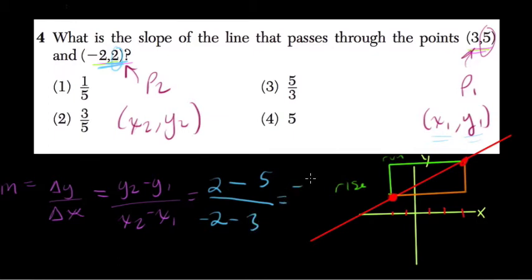2 minus 5 is negative 3, and negative 2 minus 3, well, what's that? Negative 2 minus 3 is negative 5. If I simplify negative 3 over negative 5, I know I can get it as plus 3 over 5. So here I pick 2, which is just 3 over 5.